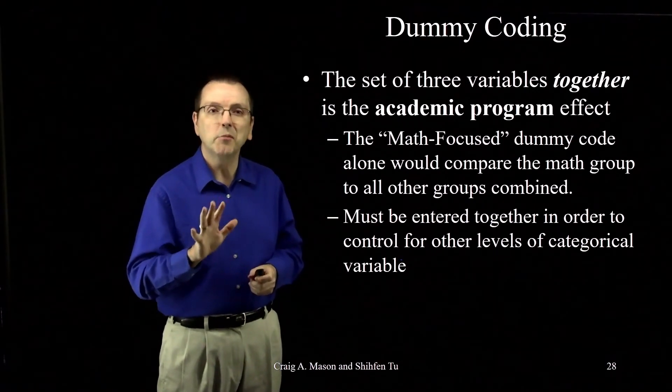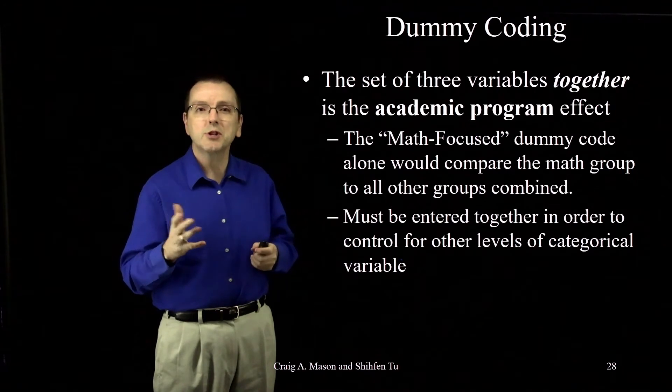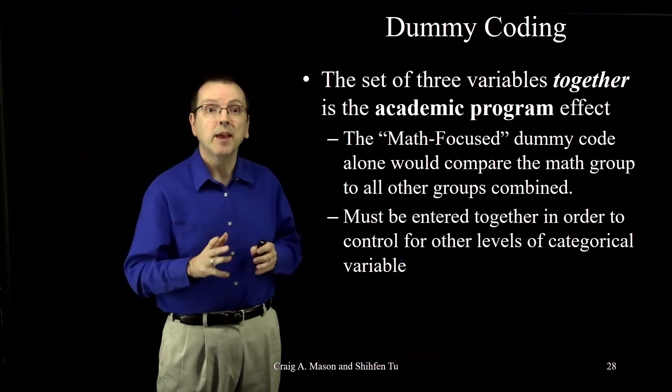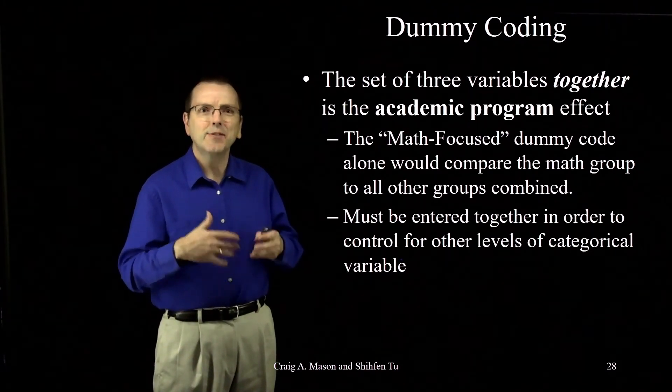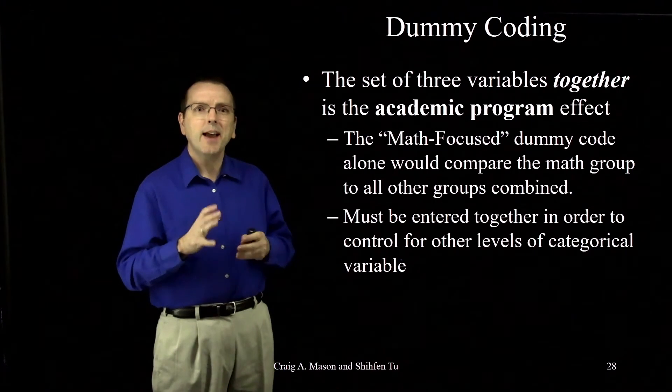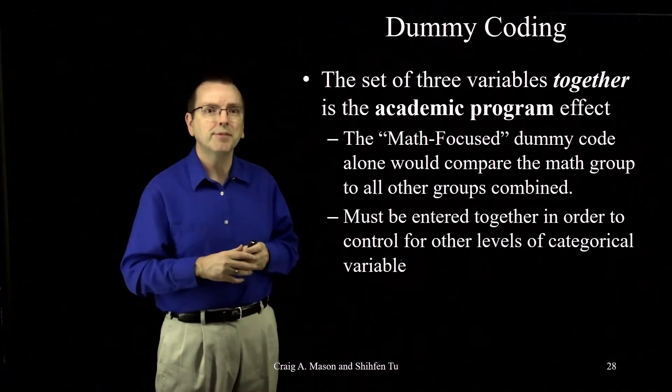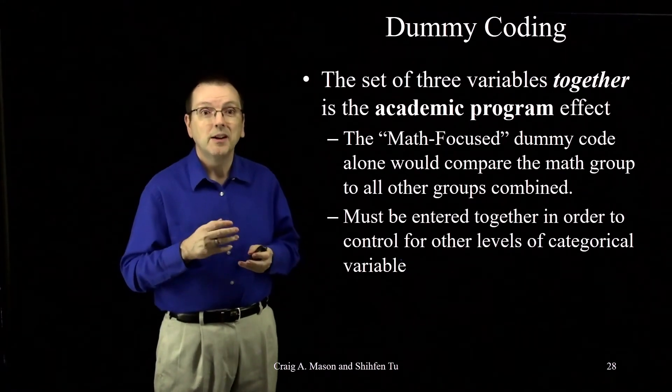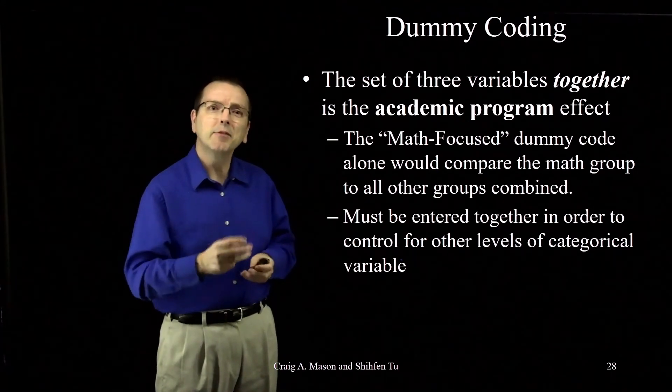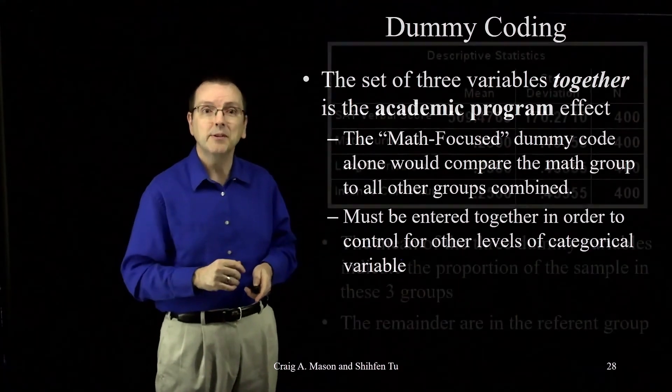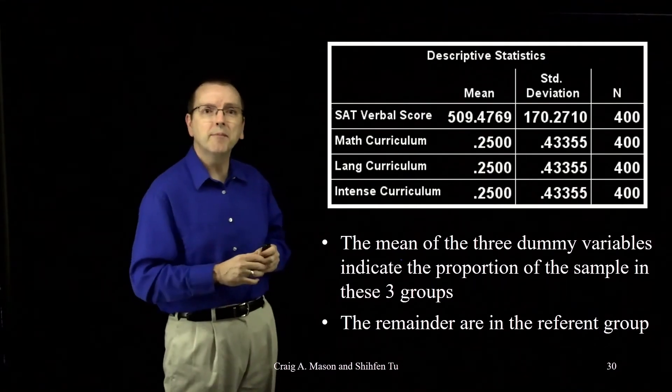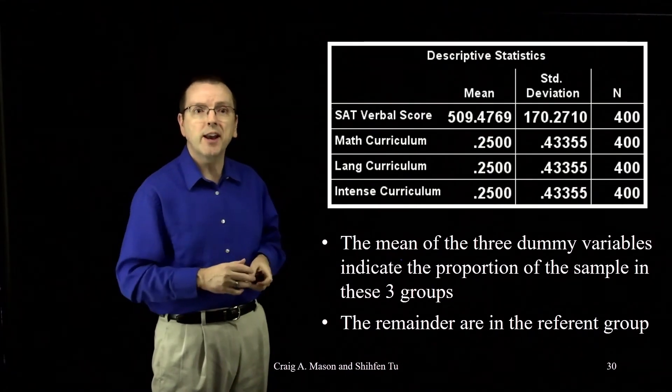Academic program, as we've described it, is all three as a set. Statistically, you have to control for all of the other levels of the categorical variable by including all three dummy variables in order to fully capture the four groups that make up academic program. Now, the language can get a little blurry because researchers and research articles will talk about things like academic program as a variable. And it is, if you think of it as a construct of academic program. But in that case, remember, it's a variable that's made up of three variables, or you can think of it as a construct or a variable made up of three dummy codes. Let's take those dummy variables that we've just made and run our multiple regression analysis.